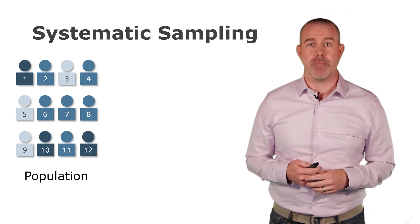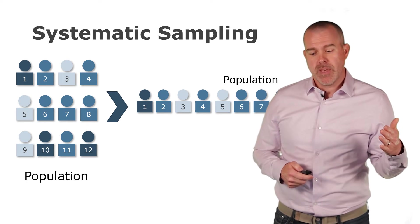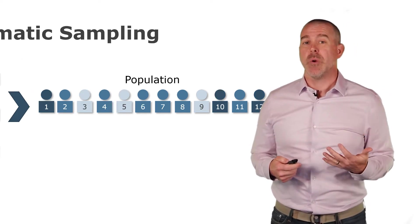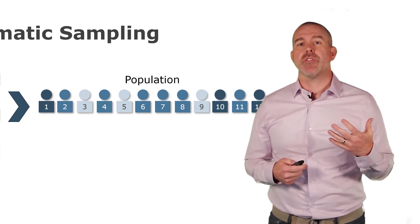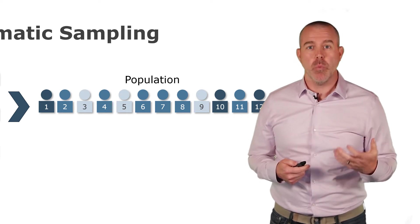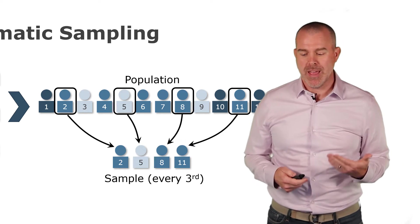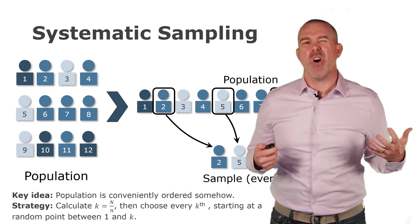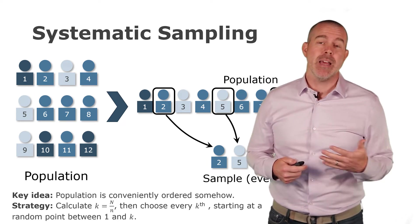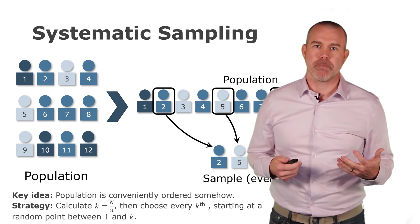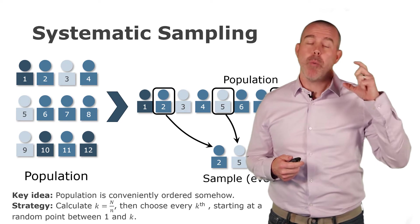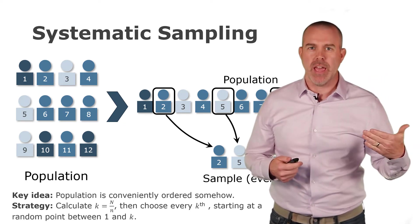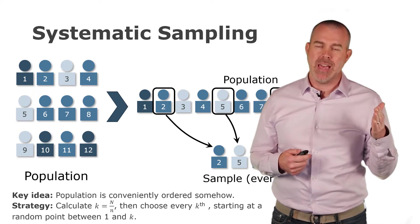The next strategy is called systematic sampling. This is when your data is all in order and you select every Kth element. With a population of 12 and a target sample of 4, you select every third. You calculate K by dividing the whole population size by how many you want in your sample. Then you randomly start between 1 and K — in this example, we happened to start at number two. The population has to already be ordered conveniently, like an assembly line or people coming out of a doorway.